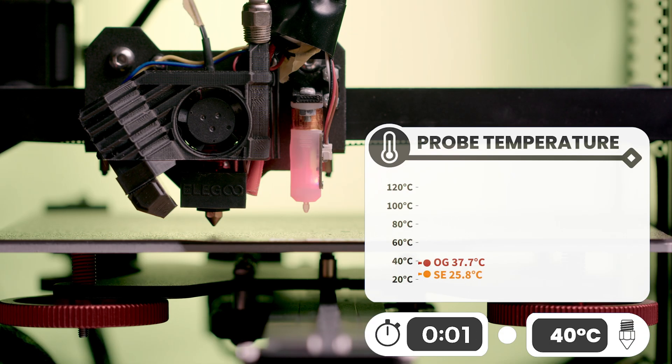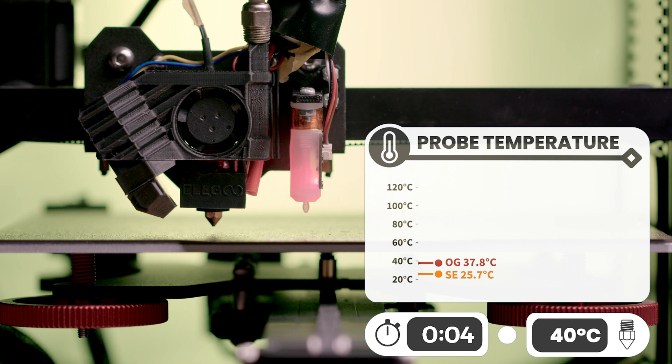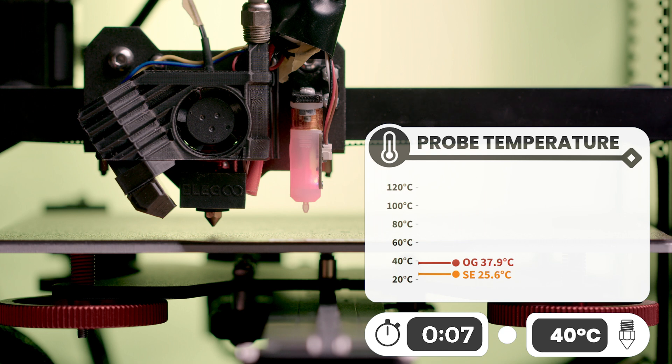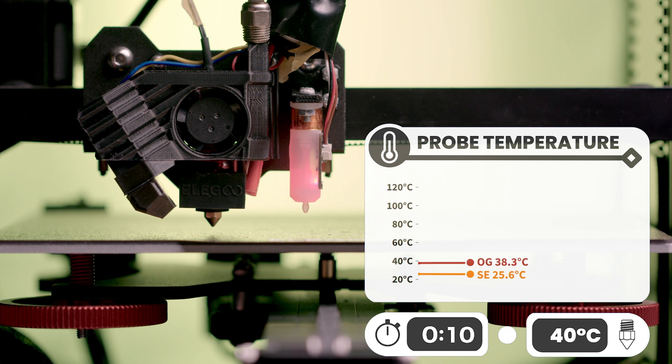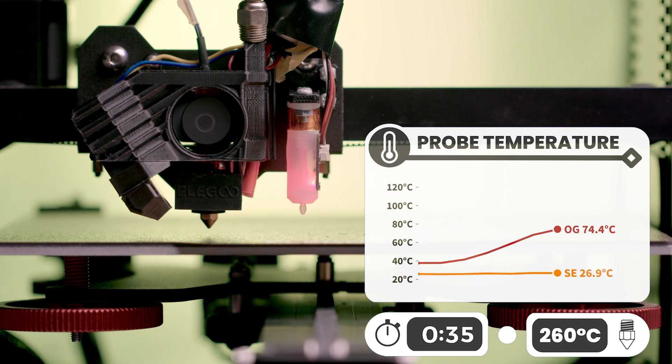I started with a preheat of 40 degrees. And we can see with the old setup that our sensor is getting almost the full temperature. But with the copperhead installed, the sensor is only seeing about 25 degrees. So we set the temperature to 260 and let it sit for 10 minutes.